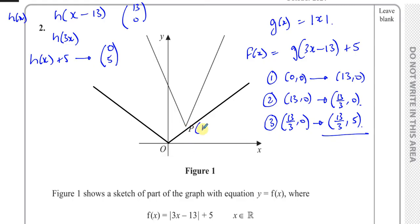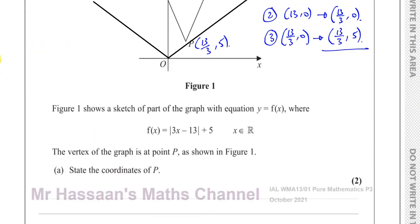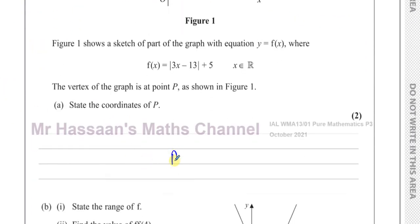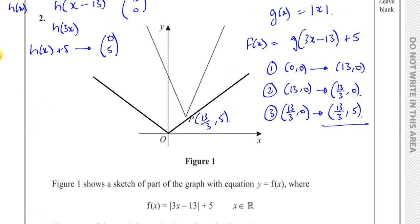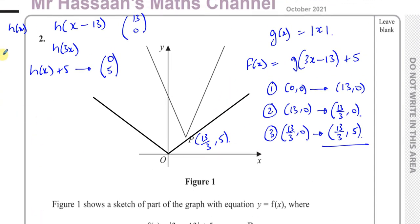So the coordinates of P are 13 over 3, 5. And 13 over 3 is 4 and one third. So P is at 4 and one third, 5. That's one way of answering this question using transformations. That's probably the easiest way — even though it takes time to explain, in an exam you can quite quickly spot this. That's why it says 'state' — you don't have to show all these steps.